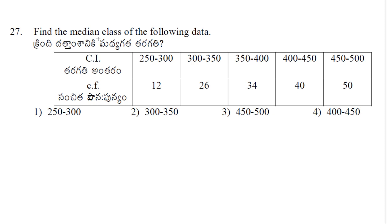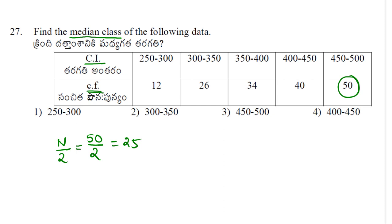Find the median class of the following data. Given class intervals and cumulative frequencies are given. To find out the median class, we need to find out where n/2 falls in the cumulative frequencies. The n value is the sum of frequencies, that is 50. So 50 divided by 2 equals 25. Now 25 falls under which cumulative frequency? If you take the first one, that is 12 — do we have 25 under 12? No. Now 26: 25 is below 26, so this is the median class, that means 300 to 350. Option 2 is correct.